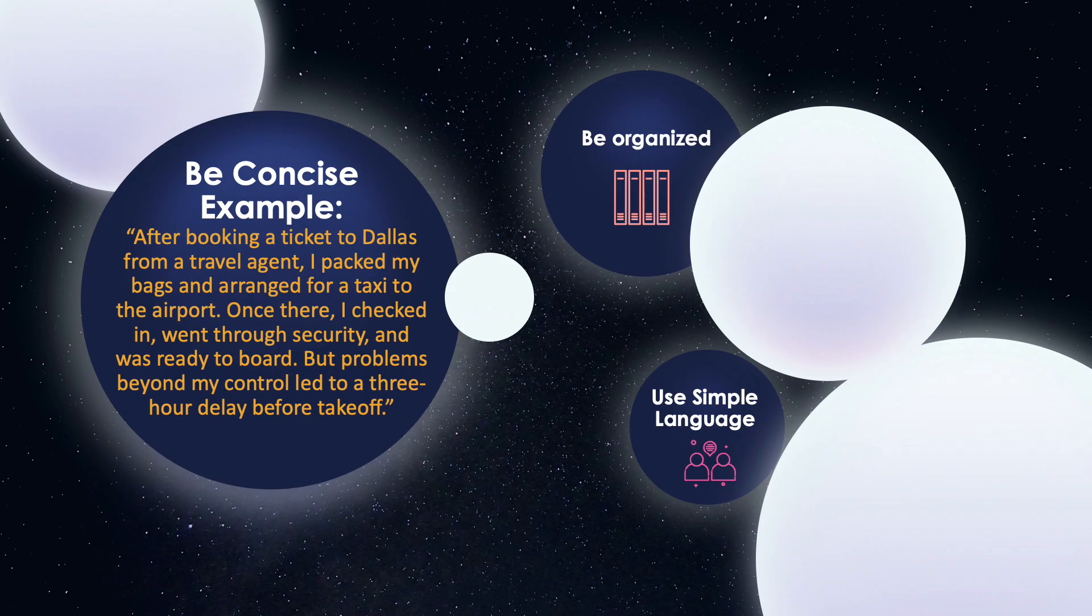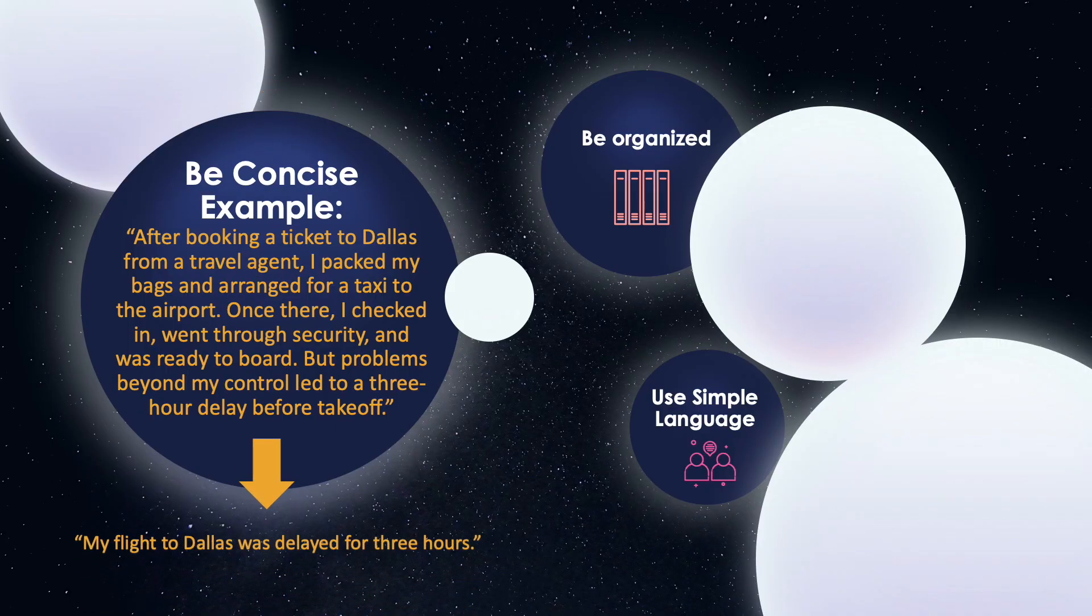The second tip is to be concise and get to the point. Time is money, so you want to convey as much information in as few words as possible in order to keep the attention of your reader. So here's an example from Purdue University, illustrating the importance of being concise. After booking a ticket to Dallas from a travel agent, I packed my bags and arranged for a taxi to the airport. Once there, I checked in, went through security, and was ready to board. But problems beyond my control led to a three-hour delay before takeoff. So these three sentences can be summarized by simply saying that my flight to Dallas was delayed for three hours, thus simplifying the original text from 47 words to 9 words.